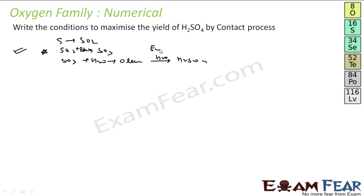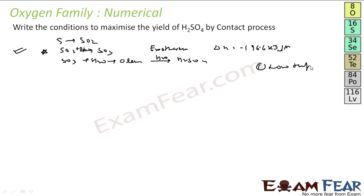This is an exothermic process. ΔH is −196.6 kJ/mol. So what we do is we try to keep the temperature low. But at too low a temperature the reaction won't even happen, so we keep the temperature at 450 K. Also, we see there is a decrease in volume.